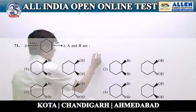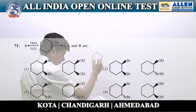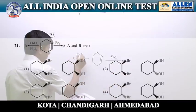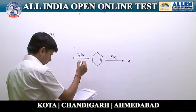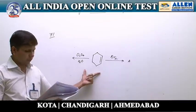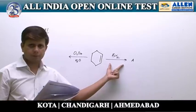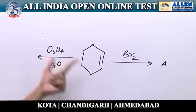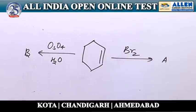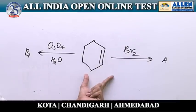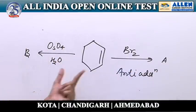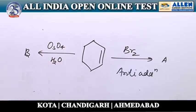Question number seventy-one. In the given question, an alkene is to be reacted with bromine to get compound A, and an alkene is to be reacted with osmium tetroxide followed by hydrolysis to get compound B. The question asks what products A and B are. As we know, addition of bromine on alkene involves an anti-addition reaction, and reaction of alkene with osmium tetroxide followed by hydrolysis involves a syn-addition reaction.